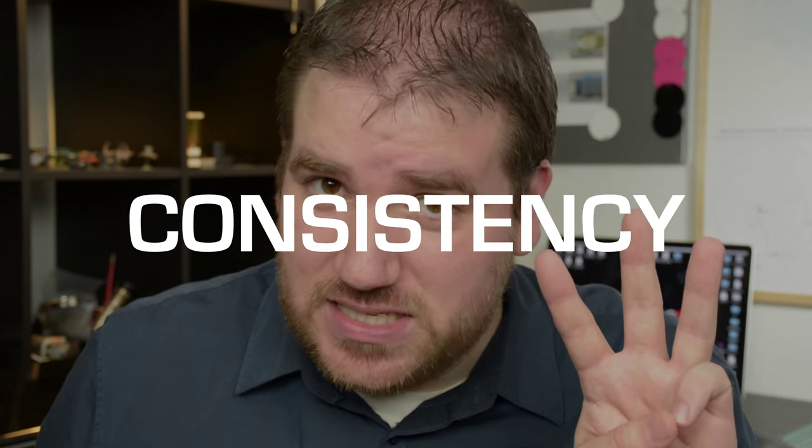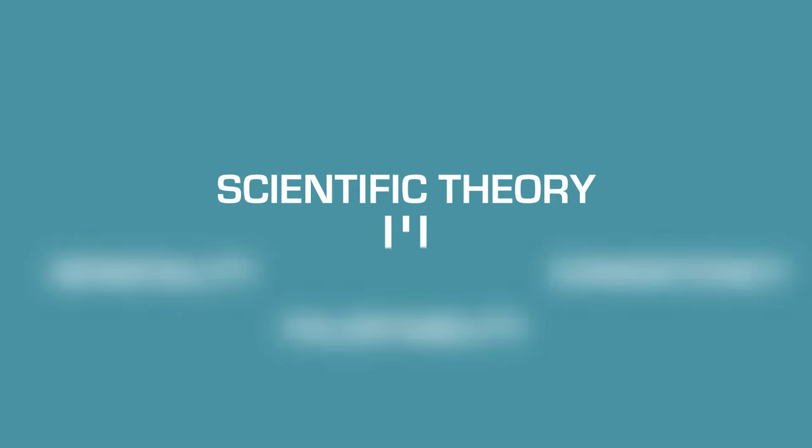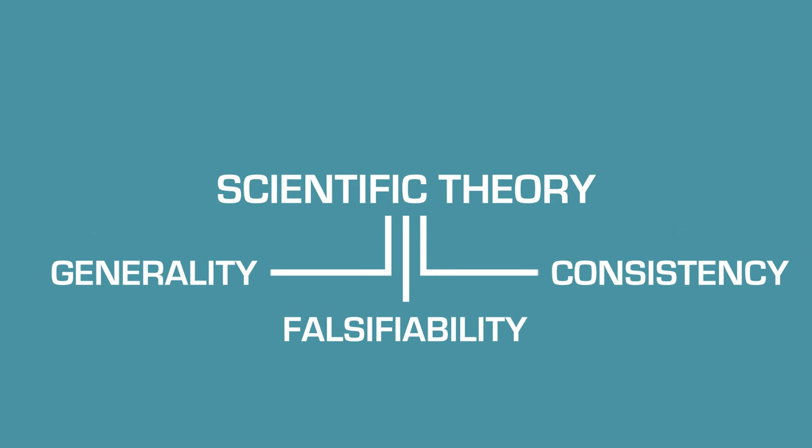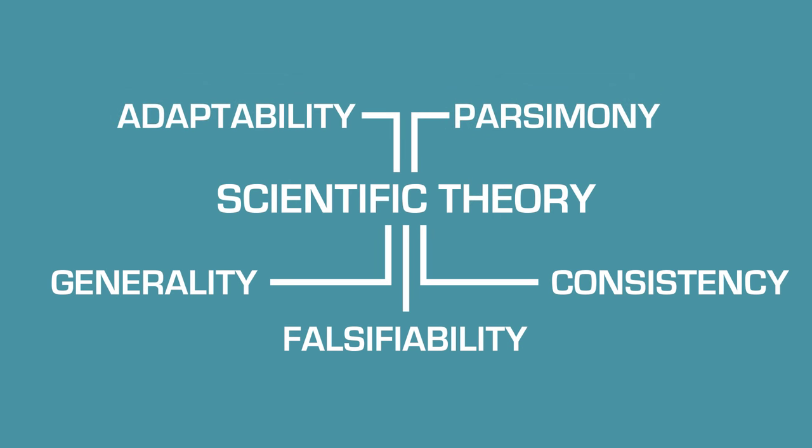Third, consistency. A scientific theory has to be able to explain all relevant existing experimental data and predict outcomes with as good as or better accuracy than existing theories on the subject, because in science, you don't get to pick and choose your facts. These three points are the most important when establishing scientific theory, but strong theories usually have two additional attributes: adaptability and parsimony.